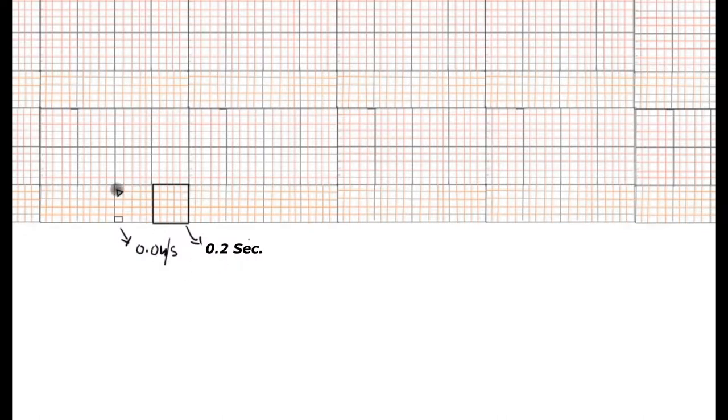The running ECG strip covers 1 second with 5 large squares. So 5 large squares are covered by 1 second, or 5×5 = 25 small squares being covered by 1 second.